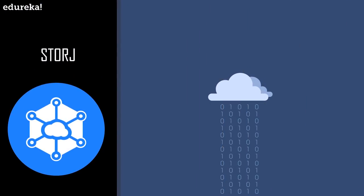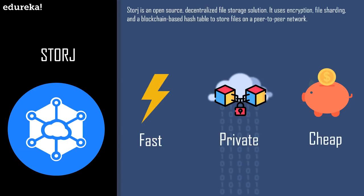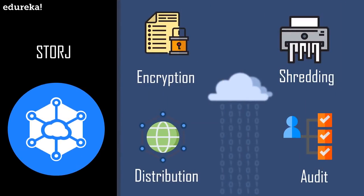Up next on our list of blockchain applications is Storj. Storj is an open source decentralized file storage solution. It uses encryption, file sharding, and a blockchain-based hash table to store files on a peer-to-peer network. The goal is to make cloud storage faster, cheaper and private. The traditional cloud storage solutions like Dropbox or Google Drive have limitations — while files are backed up redundantly, bandwidth from a data center or unexpected outages can restrict access to your files. There's also the issue with privacy as these companies have control over all your files including the ability to access them. The Storj project uses blockchain and peer-to-peer networks to solve these problems — it distributes the file so redundancy is well established, and it guarantees you're the only one who can access the files because of the encryption.